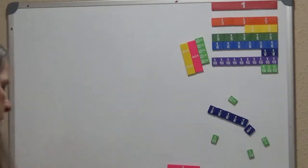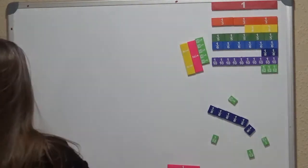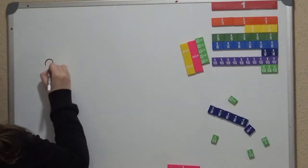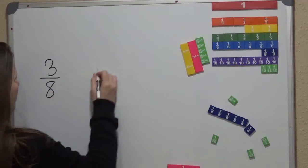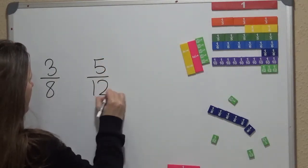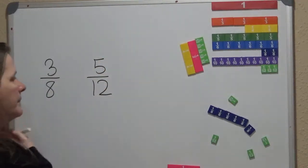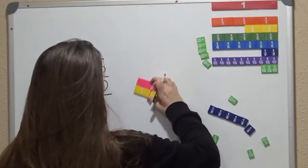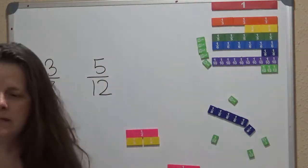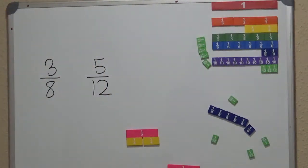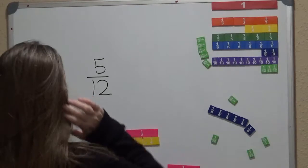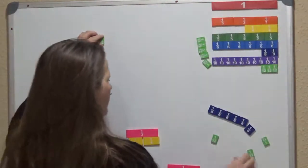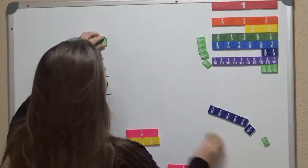Okay, so the first one we're going to do is 3 eighths and 5 twelfths. And we're trying to find out which one is going to be greater, less than, or are they going to be equivalent. So the first thing we're going to do is get the model set up. So we have 5 twelfths, 1, 2, 3, 4...